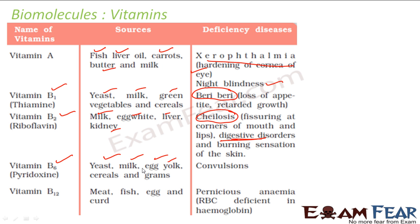Vitamin B6 is found in yeast, milk, egg yolk, cereals and grains. If you don't take this, you get convulsions.